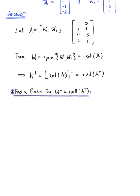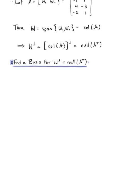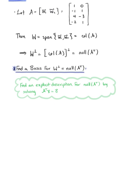So to find a basis for the orthogonal complement of the subspace of W, we need to go ahead now and find an explicit description for the null space of A transpose by solving the matrix equation, the transpose of matrix A times vector x equals the zero vector.